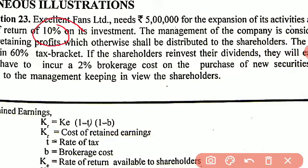If the company retains the dividend, there is no tax and no brokerage cost on retained earnings. The entire amount will be invested in the business. The company will be able to earn 10% rate of return, which will automatically increase shareholders' wealth — earnings per share and market price of equity shares.